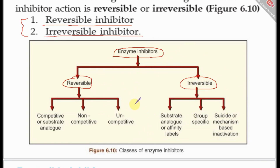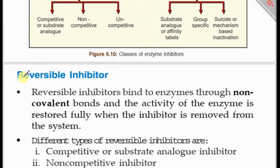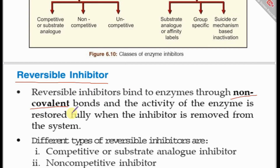Let us begin by discussing the first class of enzyme inhibitors: reversible inhibitors. Reversible inhibitors are those inhibitors which bind non-covalently with the enzymes. Non-covalent bonds include ionic bonds, van der Waals forces, and hydrogen bonds.